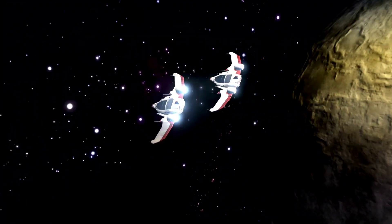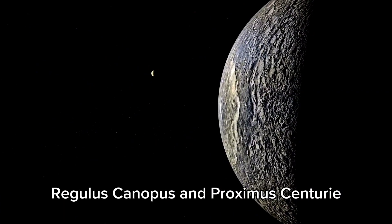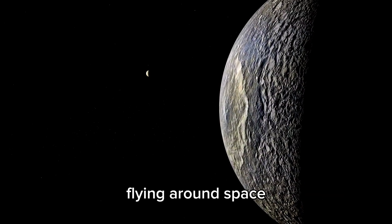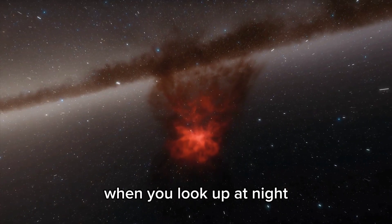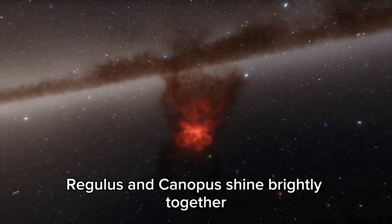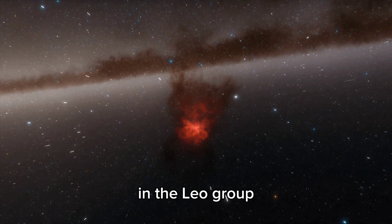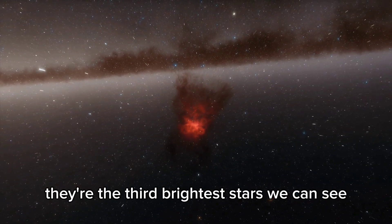Imagine three buddies, Regulus, Canopus, and Proxima Centauri flying around space, forming the star system closest to us. When you look up at night, Regulus and Canopus shine brightly together in the Leo group. They're the third brightest stars we can see.